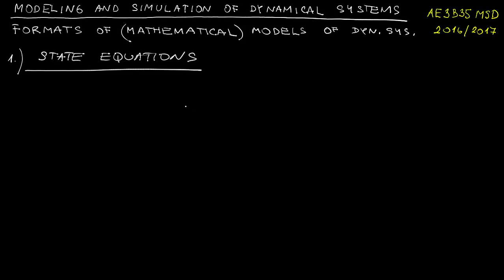A state model comes in the form of a first-order differential equation, something like this: x dot is equal to some function, generally a nonlinear function of x and possibly also explicitly t.